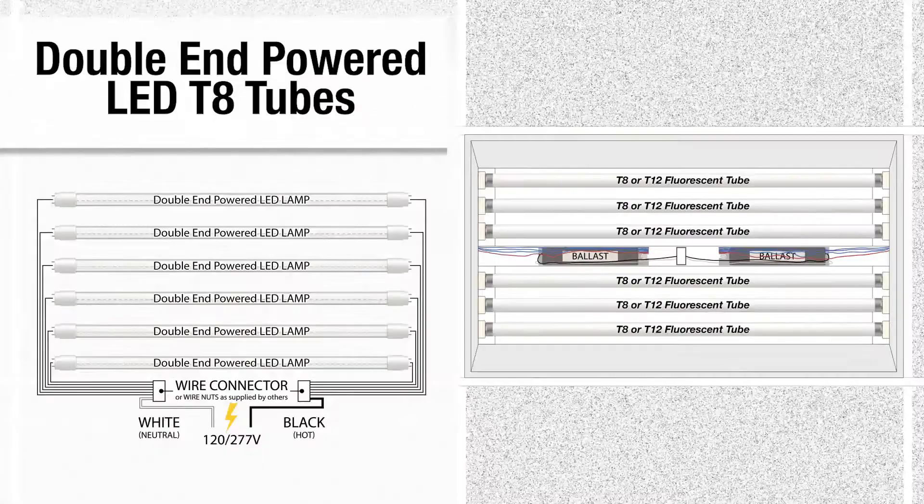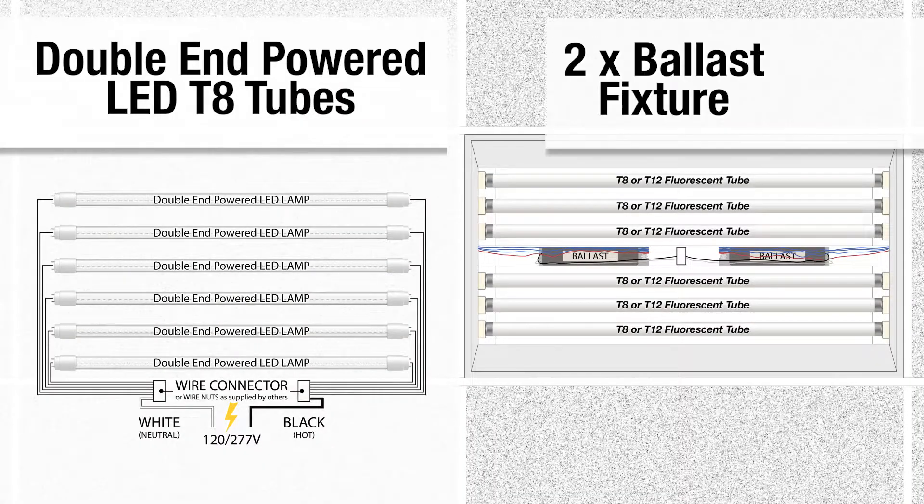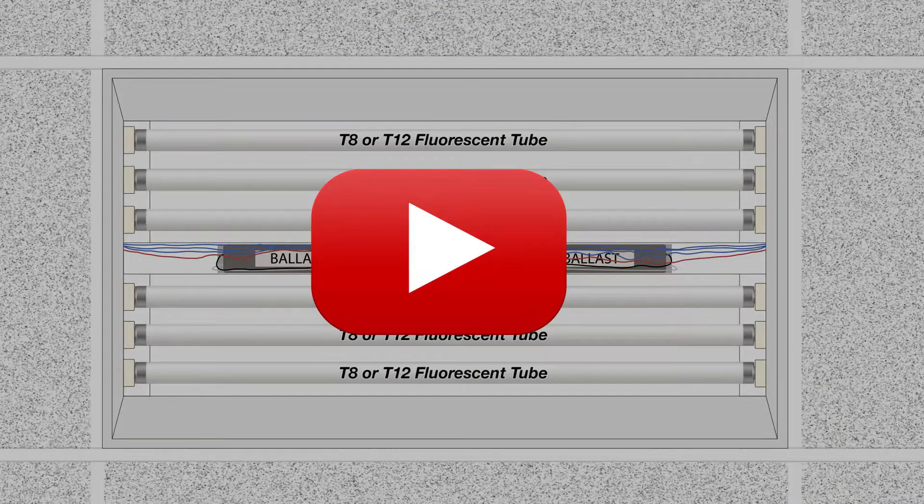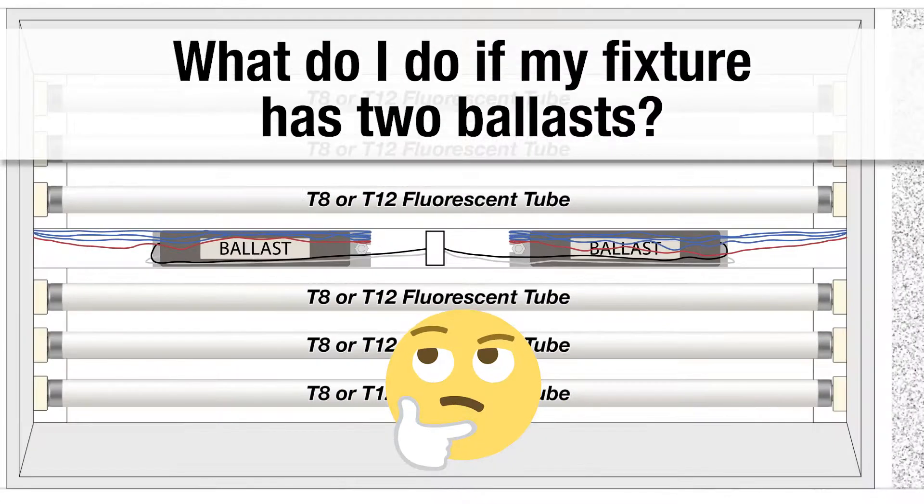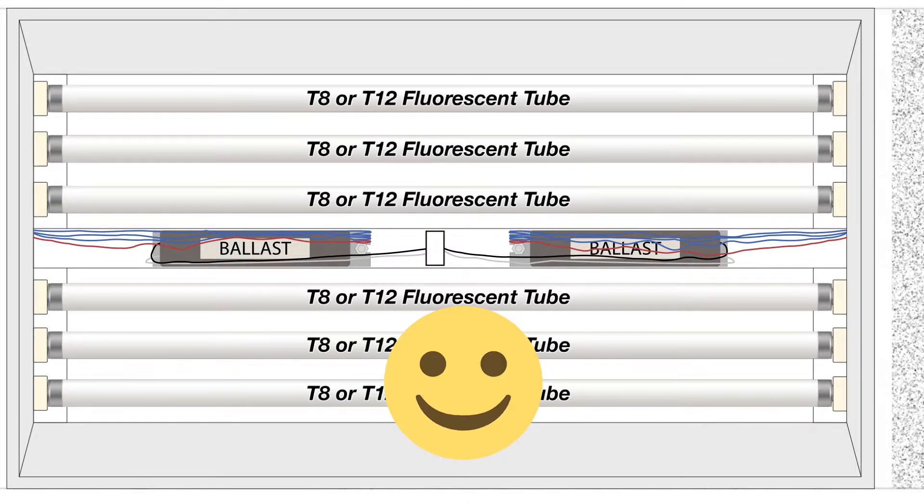LED conversion using dual end fed LED tubes in fixtures with two ballasts. The video answers the question, what do I do if my fixture has two ballasts and all kinds of wires going everywhere? We're going to show you step by step.